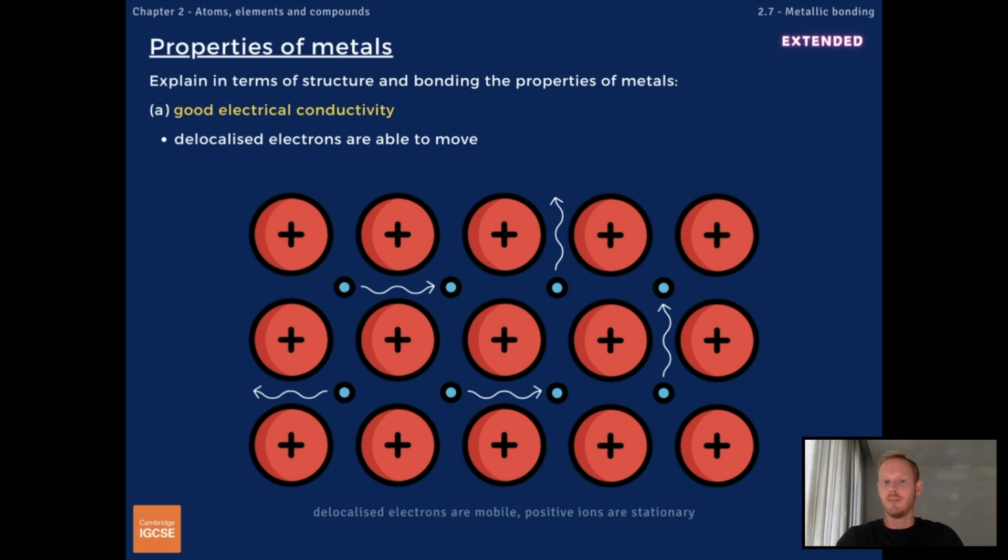This means they can move throughout the giant metallic lattice and carry electrical charge. Note that conduction of electricity in metals is caused by the movement of electrons only, and not the movement of ions.